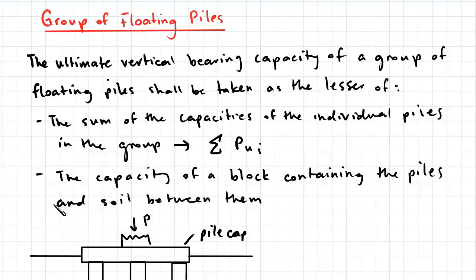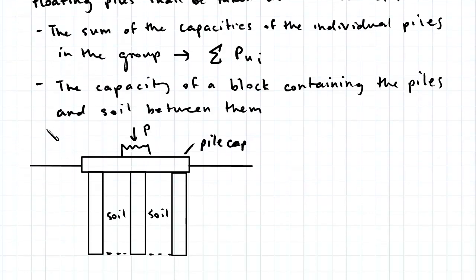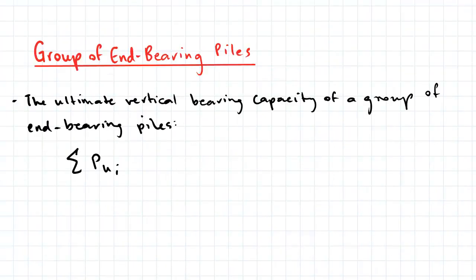Here you can see a diagram of a pile group, and when you consider it as a block, you need to also account for this soil in between the piles. The ultimate vertical bearing capacity of a group of end bearing piles on rock or on dense sand or gravel with equally strong material underneath can be taken as the sum of the vertical capacities of the individual piles in the group.